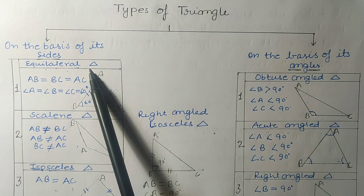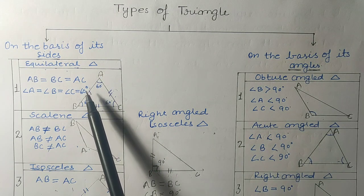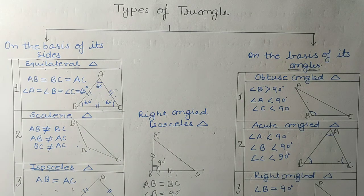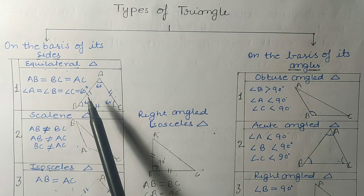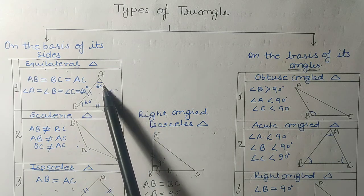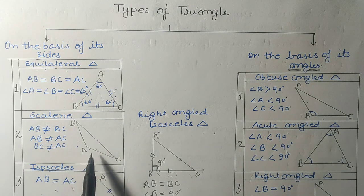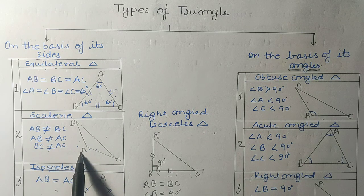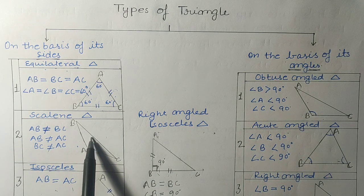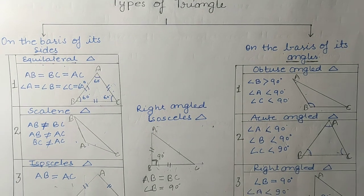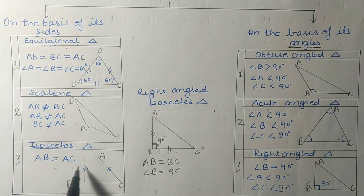In an equilateral triangle, if all sides are equal, then that triangle is known as equilateral, and all its angles are equal to 60 degrees. In a scalene triangle, no sides are equal — all sides are unequal. In an isosceles triangle, two sides are equal to each other.